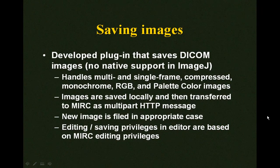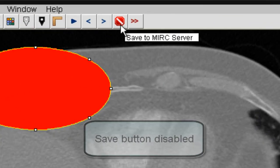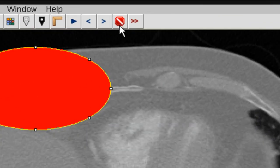We developed a plug-in that allows ImageJ to save DICOM images. The plug-in can save multi-frame and single-frame DICOM. It also can save images that were originally compressed, but it doesn't re-compress them when saving. It handles monochrome, RGB, and palette color images. The plug-in is triggered by pressing a toolbar button. The button is disabled when the user does not have the privileges to edit the image in Merck.